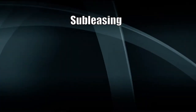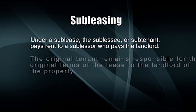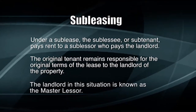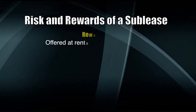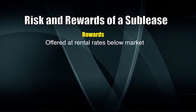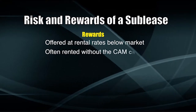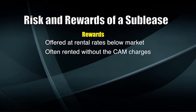Under a sublease, the subtenant pays rent to the sublessor who then pays the landlord, also known as the master lessor. The original tenant remains responsible for the original lease terms. From the tenant's perspective, subleases are often offered at below-market rates because the current tenant is leasing to cover some of their cost, and because there are inherent issues with subleasing not common in direct leases. Subleases are often rented without the CAM charges paid by a direct tenant.